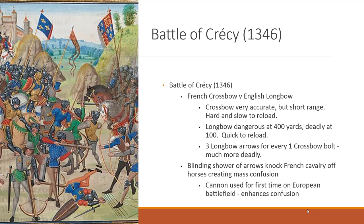A shower of arrows knocked French cavalry off their horses, creating mass confusion. Cannons were also used for the first time on a European battlefield, adding to the chaos. The English lost between 40 and 300 soldiers, while the French lost 4,000 soldiers—including 1,500 noblemen. Even though the French had larger numbers, they suffered far more casualties, and their crossbows could not hold up to the English longbow.